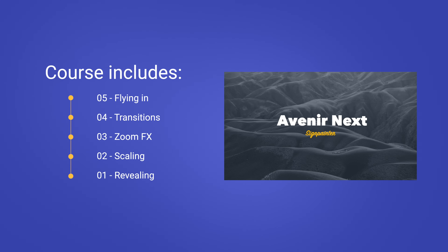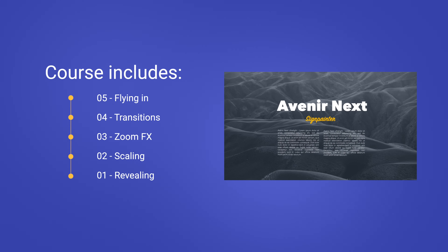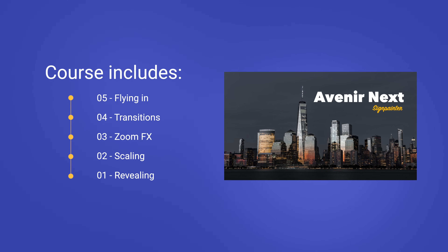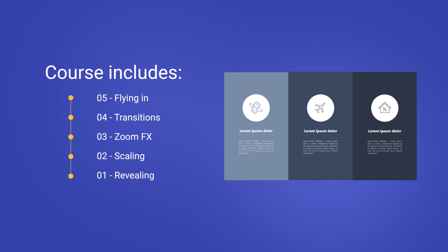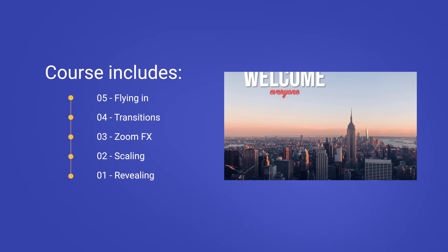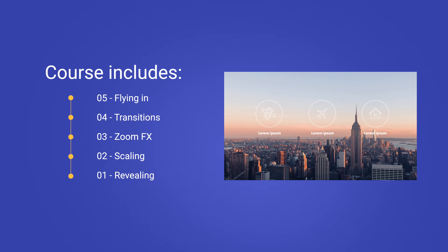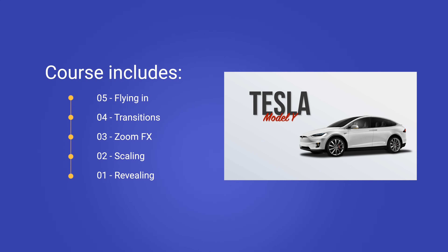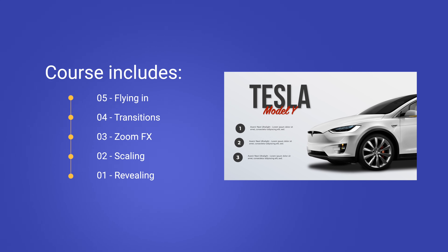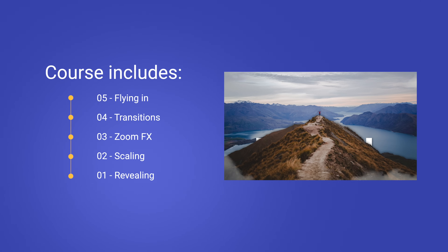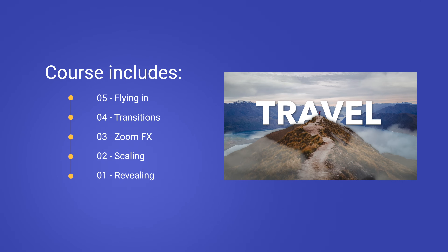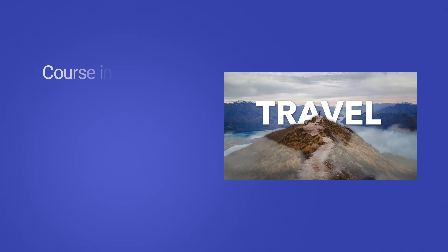As a summary, we have seen: the flying-in effect for text or objects; transitions between slides in a more creative way; the zoom effect for PowerPoint presentations; scaling to make objects larger — great for products; and the reveal effect with text and fly-in animations combined. Thanks a lot for watching. If you're looking for more PowerPoint tutorials, check out the one showing on the screen. Hope to see you in the next video.